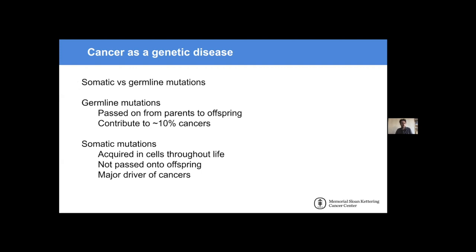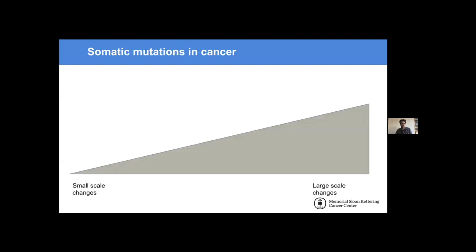Somatic mutations can be important transitions going from normal cellular function to malignant cellular function. I'm going to run through a few of the different types of mutations we can observe in cancer, going from very small-scale changes on the left of this slide up to very large-scale changes of the genome. At the smaller end we have single base pair changes — the simplest type of mutations we see in cancer genomes. For example, when a T goes to a C would be one example of that kind of mutation.